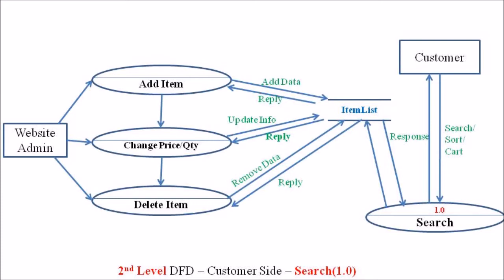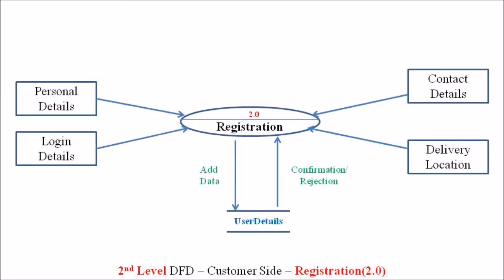Moving to the second process, the registration process: the entities associated with this process are personal detail, login detail, contact detail, and delivery location, all represented in rectangular boxes. Since we are dealing with the level 2 DFD of registration, the registration process is represented as an ellipse and coordinates data with the data store called user details. When a customer registers with the web portal, those data are stored in the user detail data store.